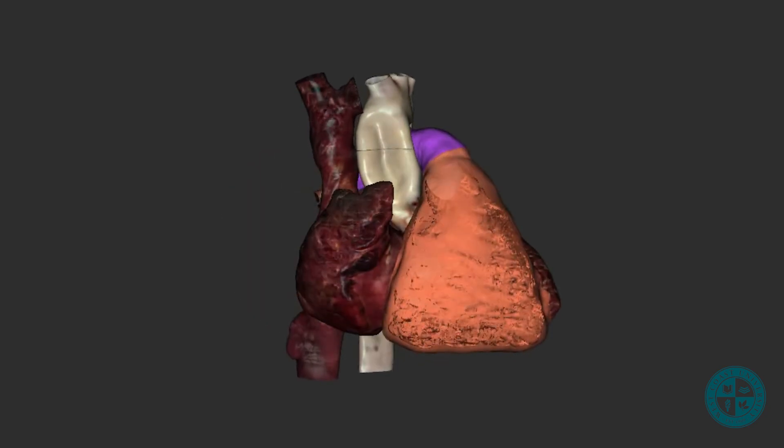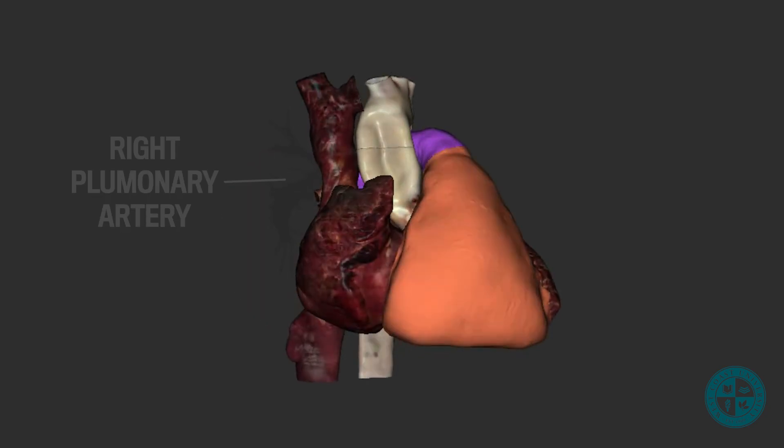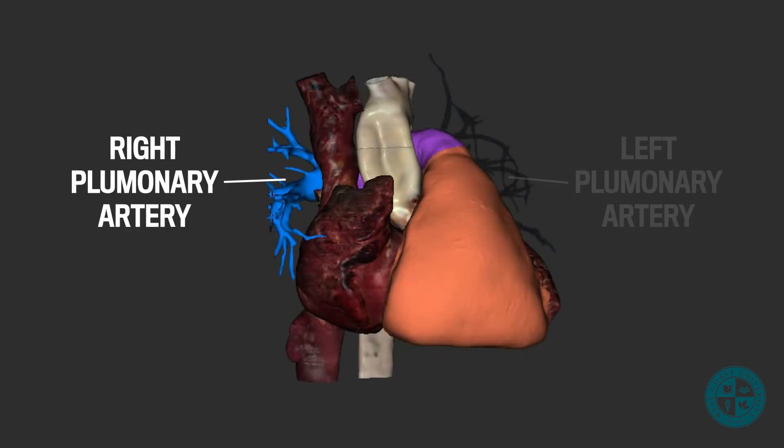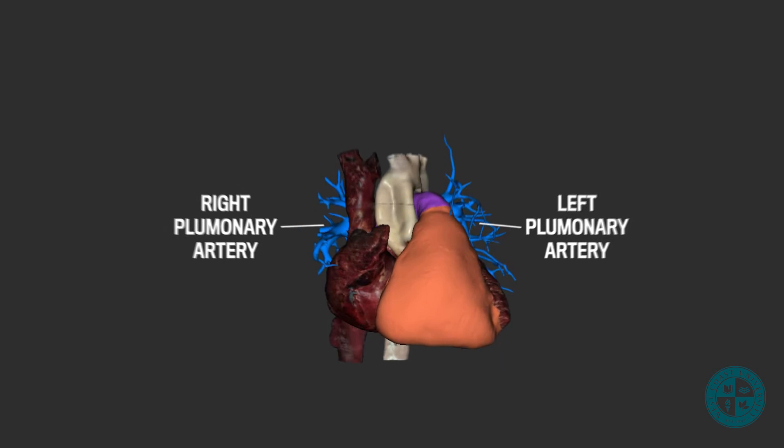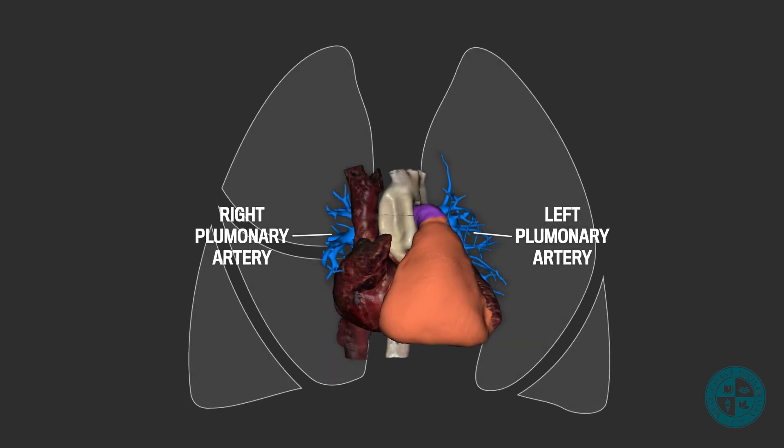As we enter the pulmonary trunk, we will see that it branches into the right and left pulmonary arteries. These vessels will then enter the hilum of the lung and the blood will make its way through the pulmonary circuit and become oxygenated.